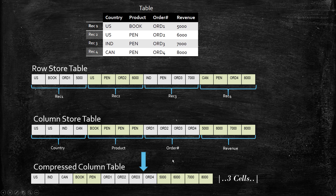We can save three cells after compression. This is a small table with four entries and already it saved three cells. For example, a company sells only 10 different products. And if you see the sales table — if that sales table has 10 million rows — the product column will have only 10 different products. So instead of 10 million rows, the column store table holds only 10 entries for the product column. That means the compression happened at a million times.